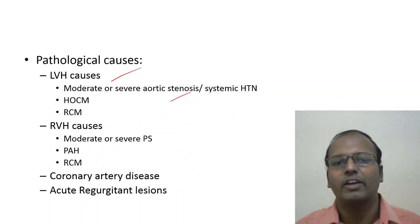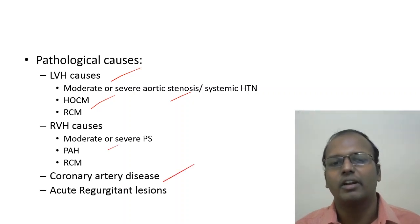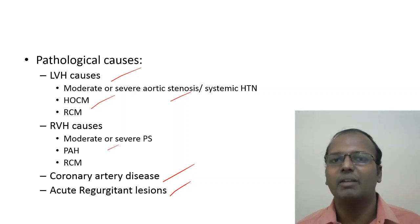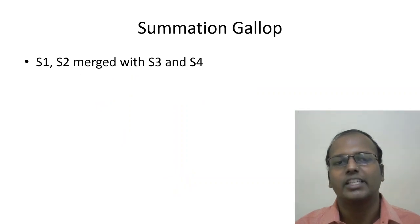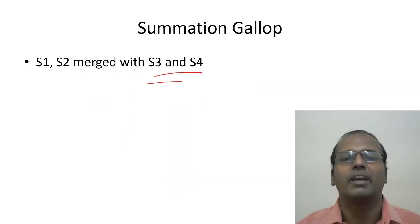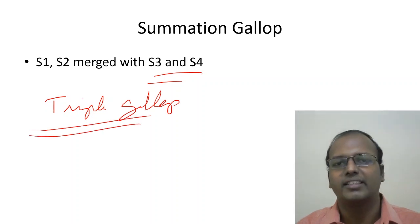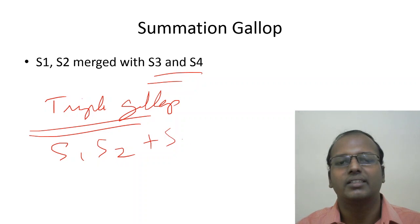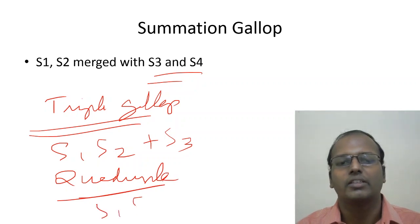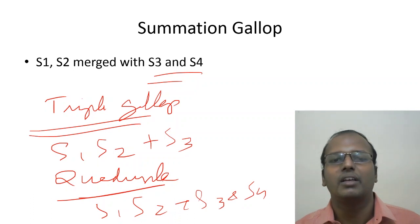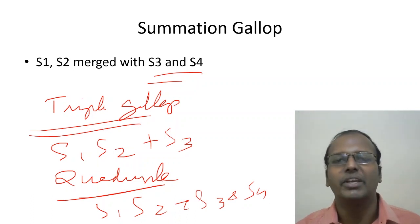Pathological causes of S4 include LVH with diastolic dysfunction, hypertension, HOCM, RVH causes such as pulmonary stenosis and pulmonary hypertension, coronary artery disease, and acute regurgitating lesions like acute MR (where the left ventricle is not yet grossly dilated). Summation gallop occurs when S3 and S4 merge together. Triple gallop is S1, S2 plus S3. Quadruple gallop is S1, S2 plus both S3 and S4. If S1/S2 merges with S3/S4, it is called summation gallop.